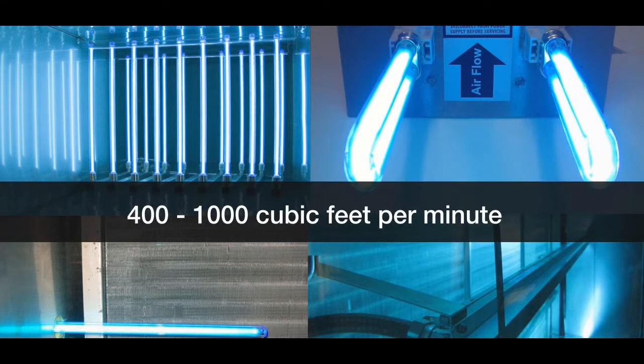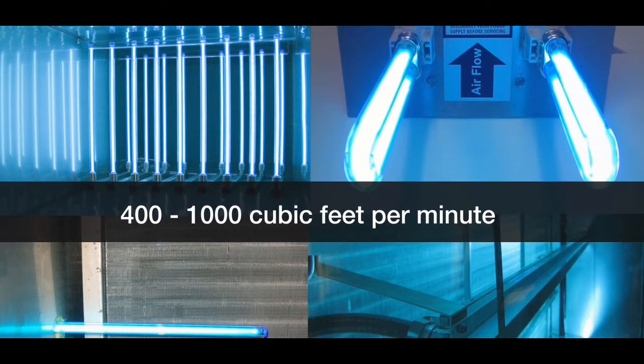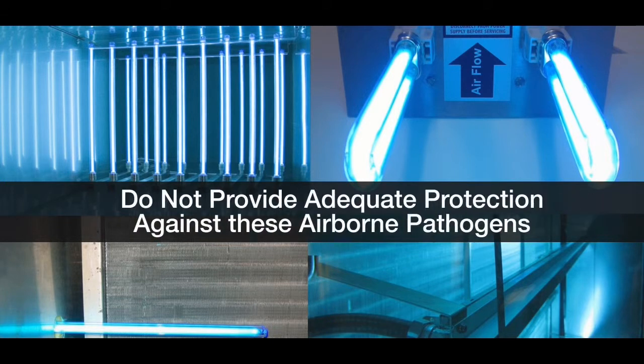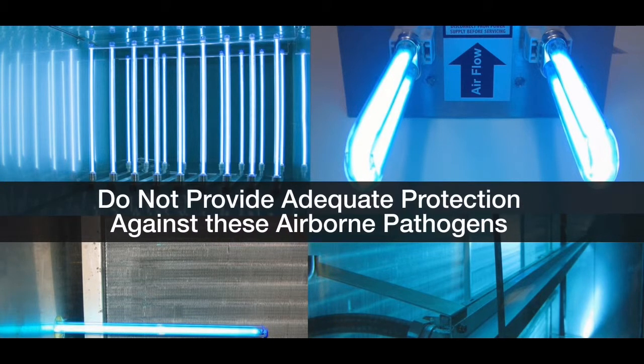The airflow rate in most HVAC systems is between 400 and 1000 cubic feet per minute. With this volume of airflow the UV lamps in a duct do not provide an adequate protection against these airborne pathogens.